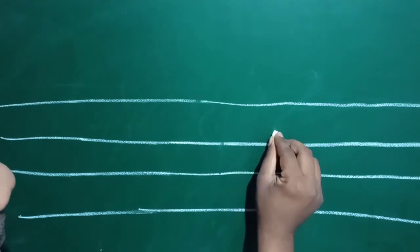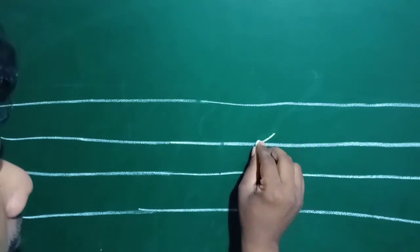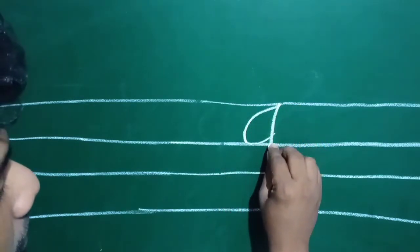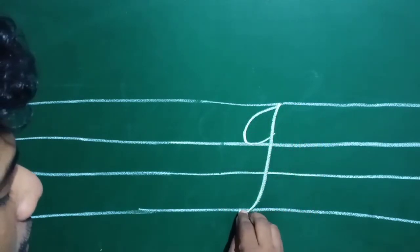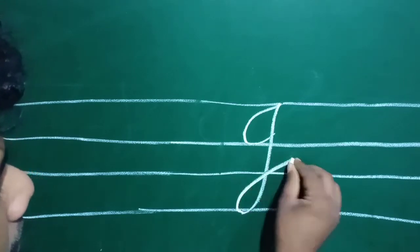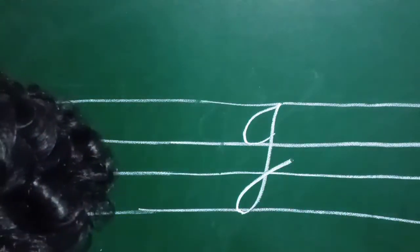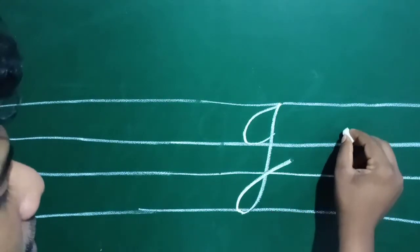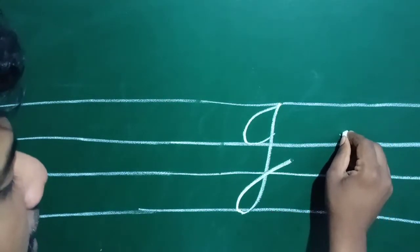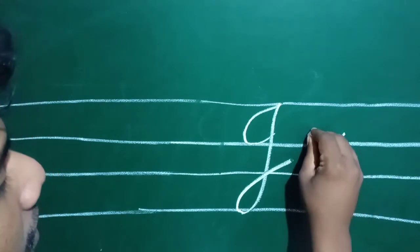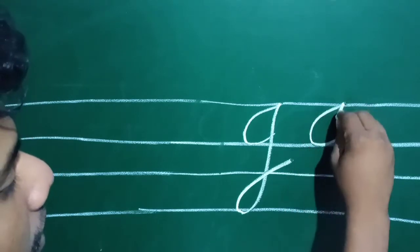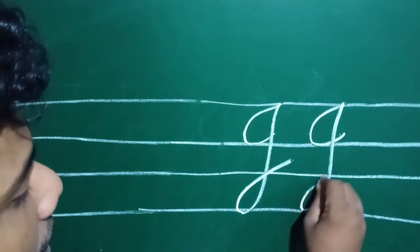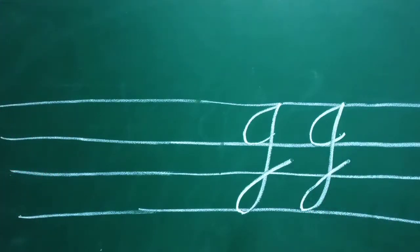Like this — capital letter J. Likewise, once again, starting from the second line. Capital letter J.